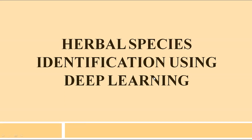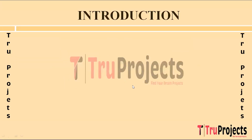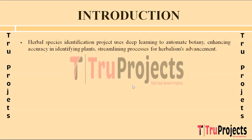Welcome to True Projects. In this video we are going to explain the project: Herbal Species Identification Using Deep Learning. This is a cutting-edge project aimed at revolutionizing the field of botany and herbalism by harnessing the power of deep learning algorithms. This project seeks to automate and streamline the process of identifying various species of plants and herbs.